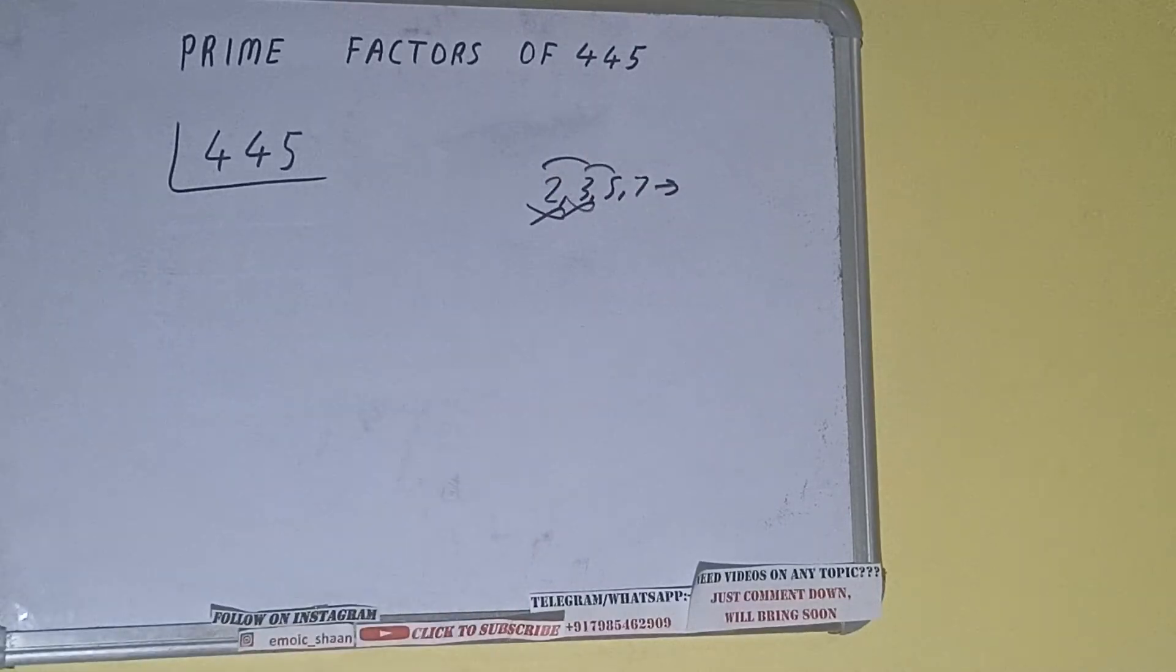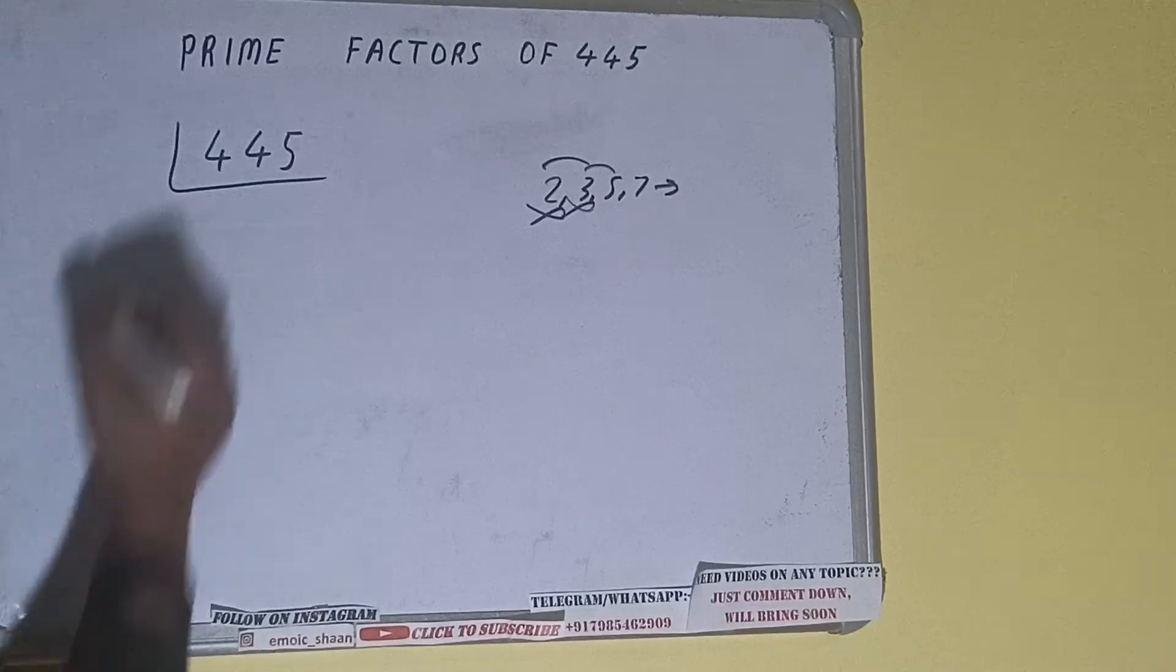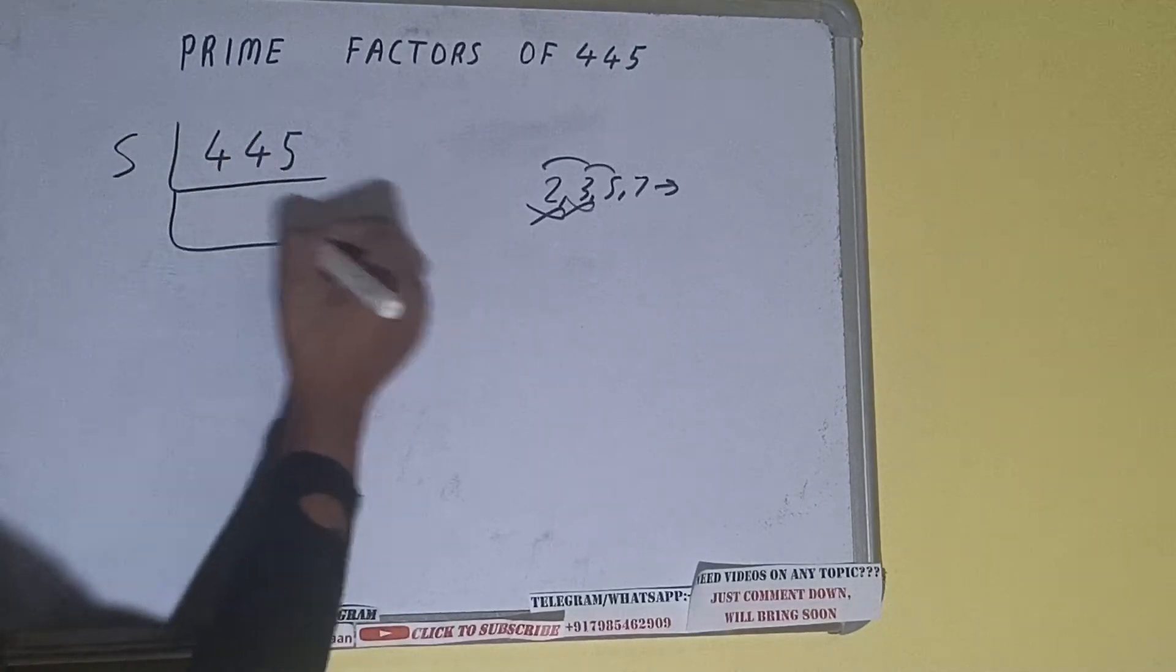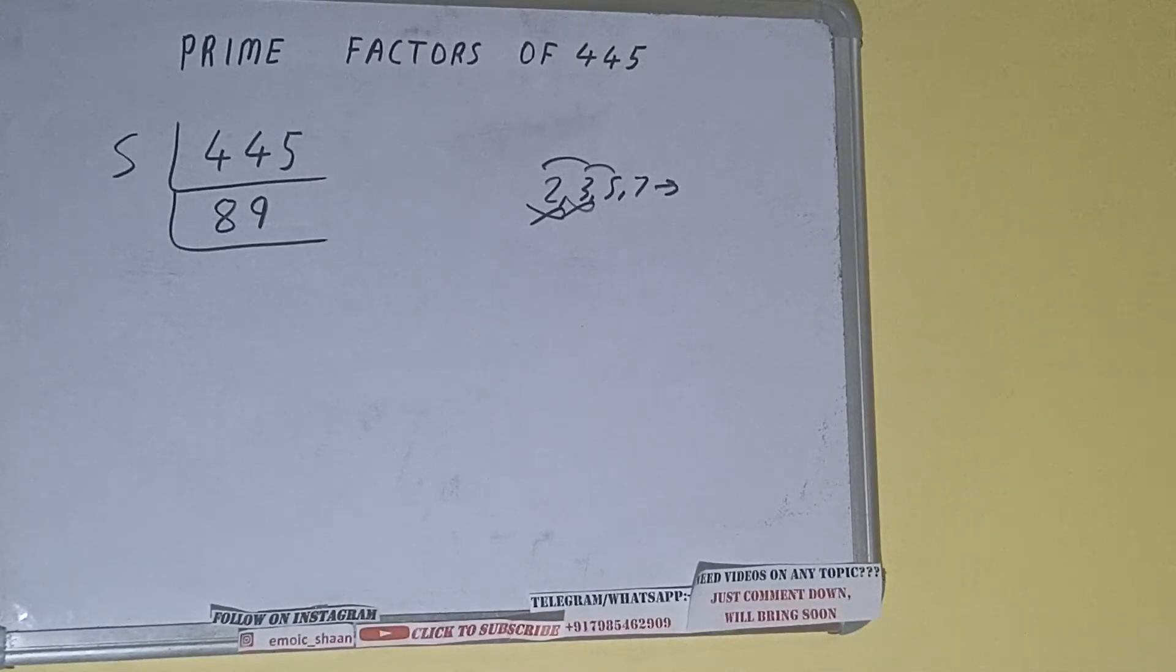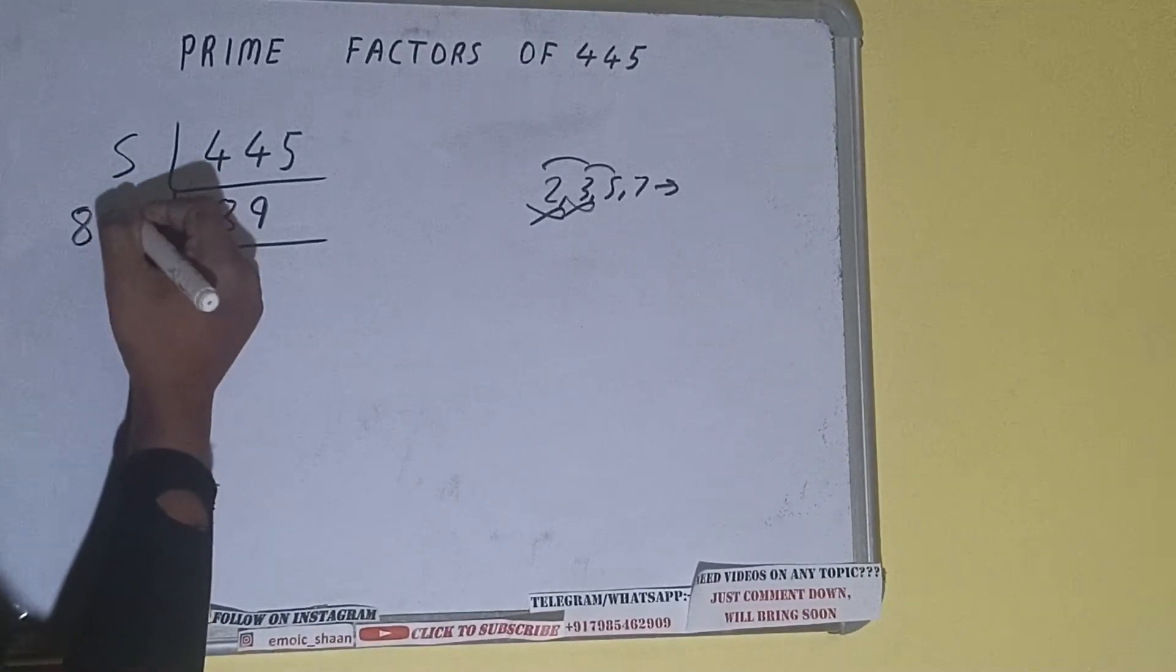The last digit is five, so it is divisible by five. So divide it. Five goes into forty-four five, five nine into forty-five. We'll be having 89, and 89 is not divisible by five. And also 89 is a prime number, so it is only divisible by itself, that is 89.